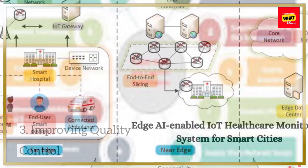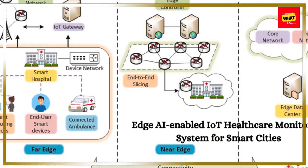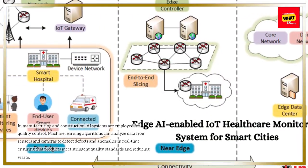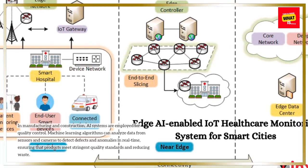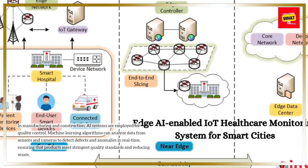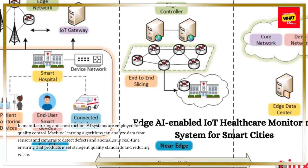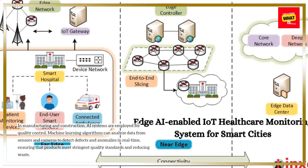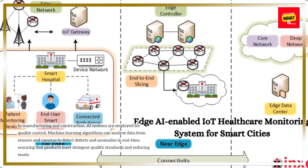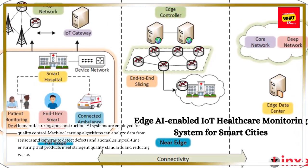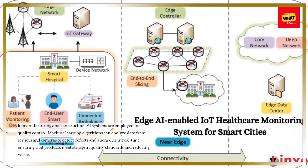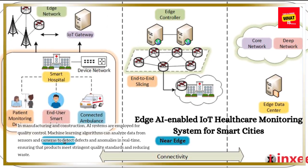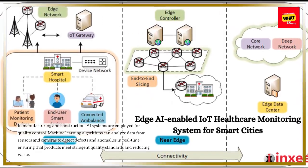Improving quality control: In manufacturing and construction, AI systems are employed for quality control. Machine learning algorithms can analyze data from sensors and cameras to detect defects and anomalies in real-time, ensuring that products meet stringent quality standards and reducing waste.